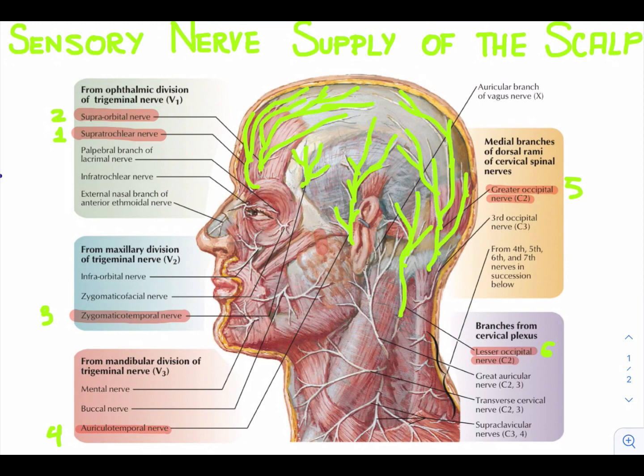Hello everyone, welcome to today's lecture on sensory nerve supply of the scalp. The sensory nerve supply of the scalp is basically provided by six main nerves. The main trunks of the sensory nerves lie in the superficial fascia, moving laterally from the midline anteriorly, the following nerves are present.